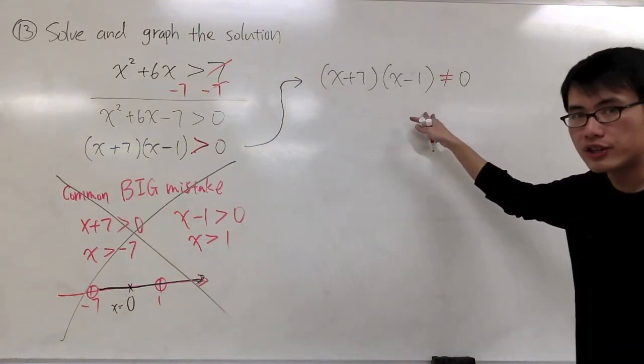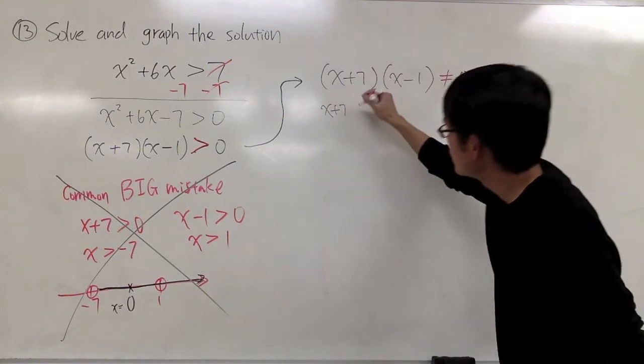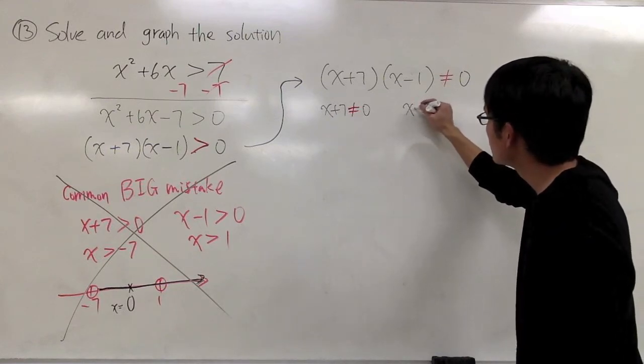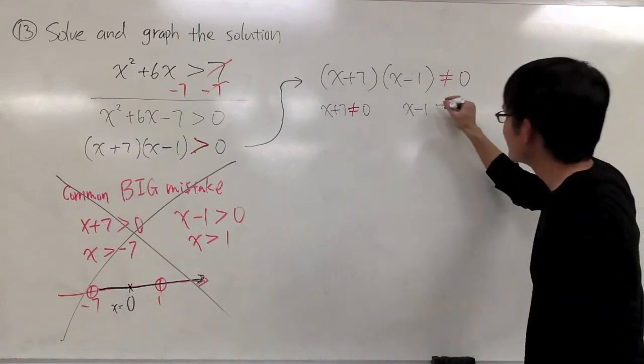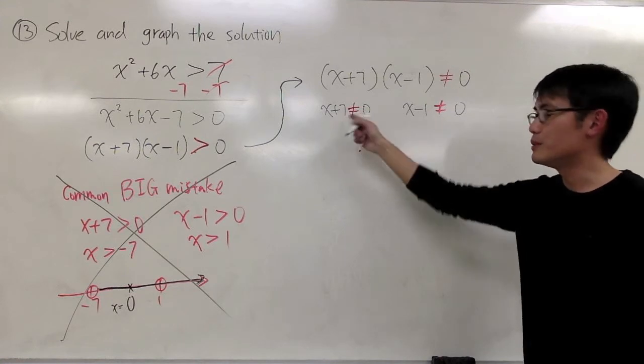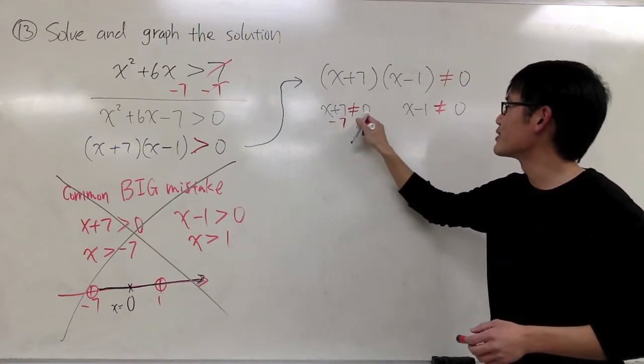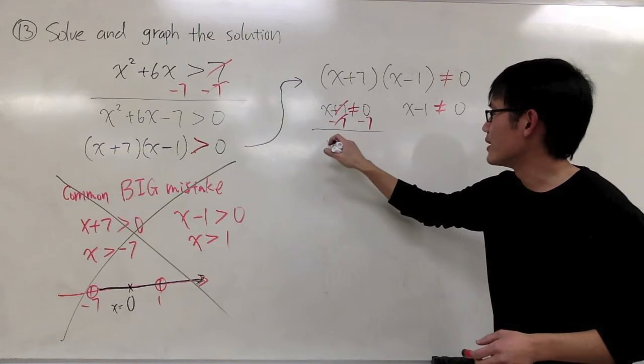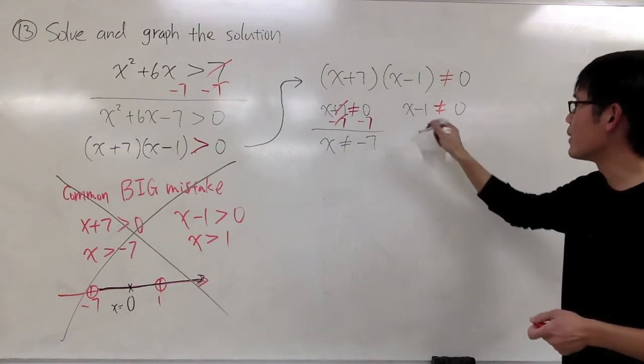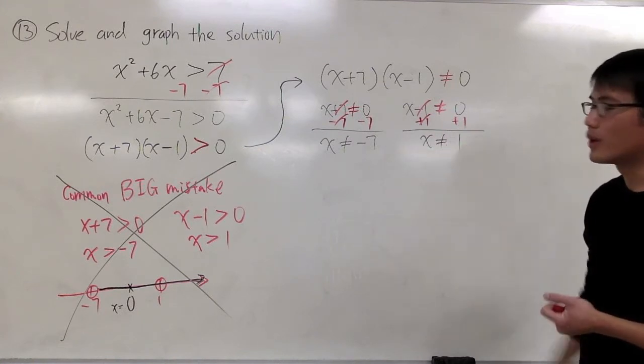I'll go ahead and do my computation. Here we'll get x plus 7 is not equal to 0, and here we will have x minus 1 is not equal to 0. We can solve this inequality just like a normal equation, maintaining the not equal symbol. Minus 7 on both sides, I get x is not equal to negative 7. And after we add 1 on both sides, we will end up with x is not equal to 1.